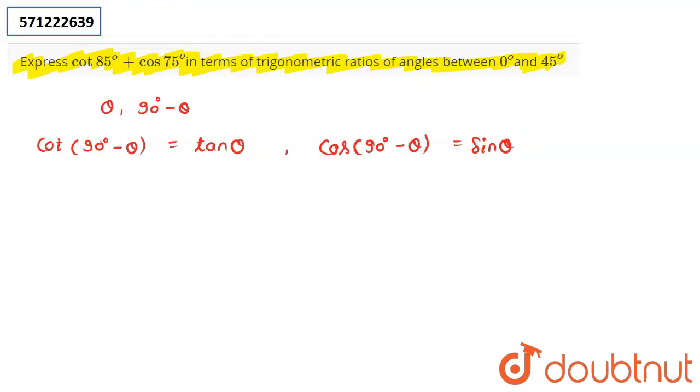If my expression is cot 85° + cos 75°, what you first do is you represent them in terms of their complementary angles. That is, you can write it as